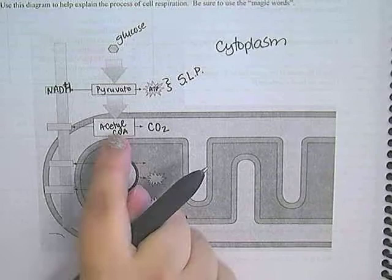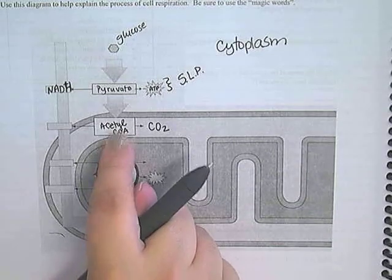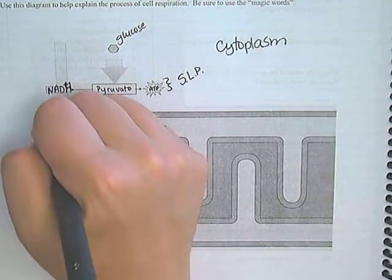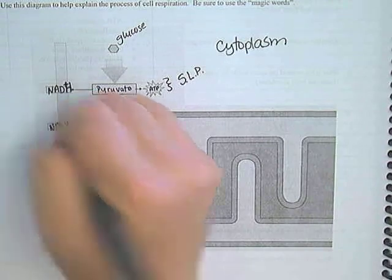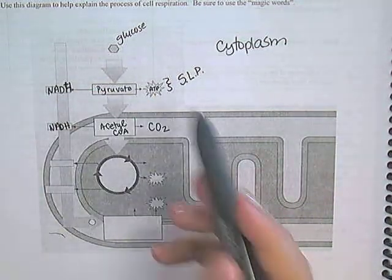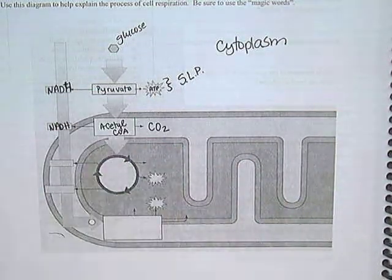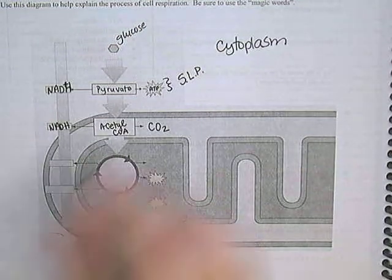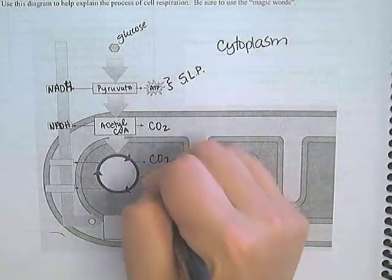I'm not going to worry at this point about keeping track of the numbers, this is just a big broad overview. The oxidation of pyruvate will also produce another molecule of NADH, and then that acetyl-CoA will enter into the Krebs cycle.